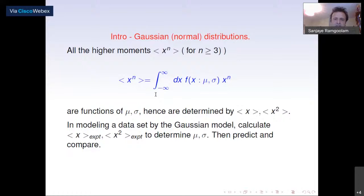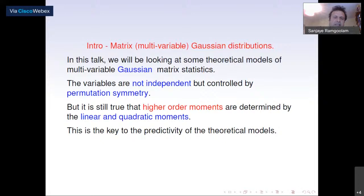If the data is really Gaussian, you'll get very good agreement between the higher order moments and the moments calculated from experiment. The idea in this talk is to look at theoretical models of multi-variable Gaussian matrix statistics, where the variables are matrices with complicated interactions controlled by permutation symmetry. Because of Gaussianity, higher order moments are still determined by the linear and quadratic moments — this is the key to the predictivity of the models.